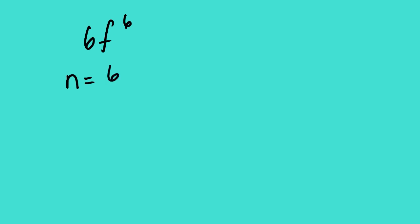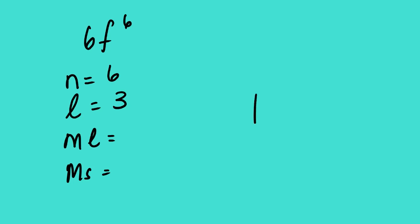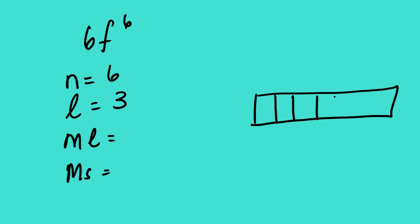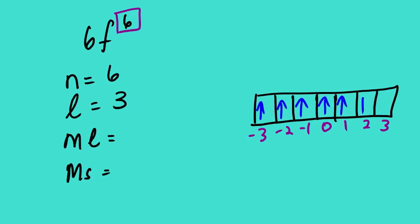For 6F6, N equals 6. For F orbital, L equals 3. We draw seven boxes labeled negative 3, negative 2, negative 1, 0, 1, 2, 3. We fill in 6 electrons, one per box. The sixth electron is at position 2. So ML equals 2. Since the electron faces up, MS equals positive one-half.